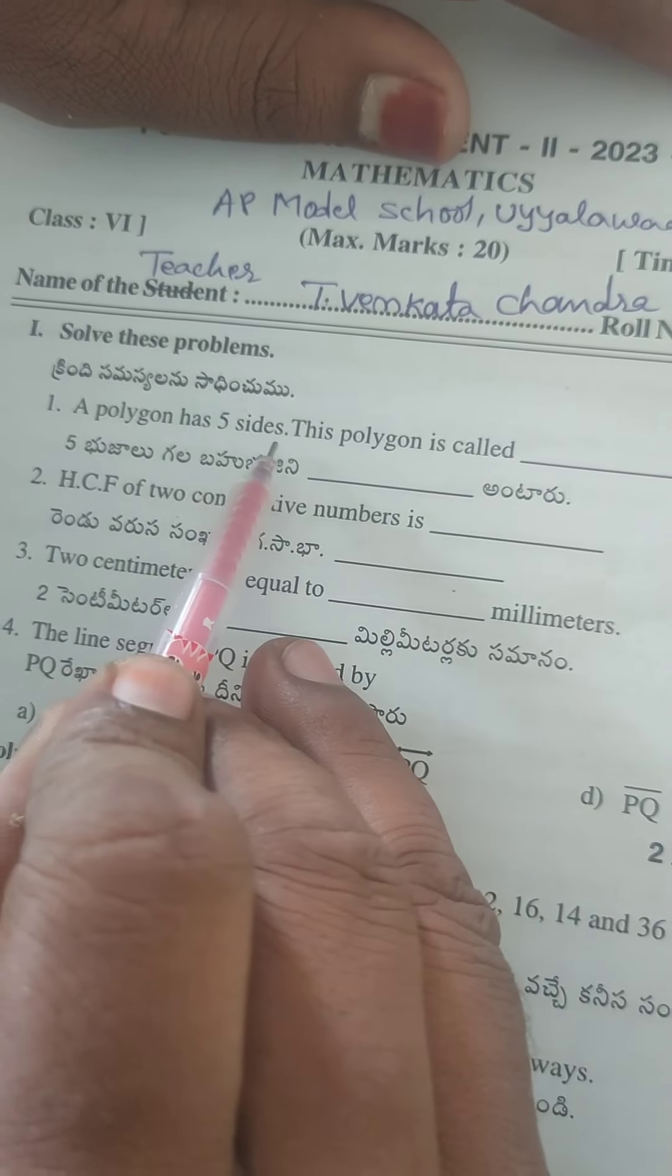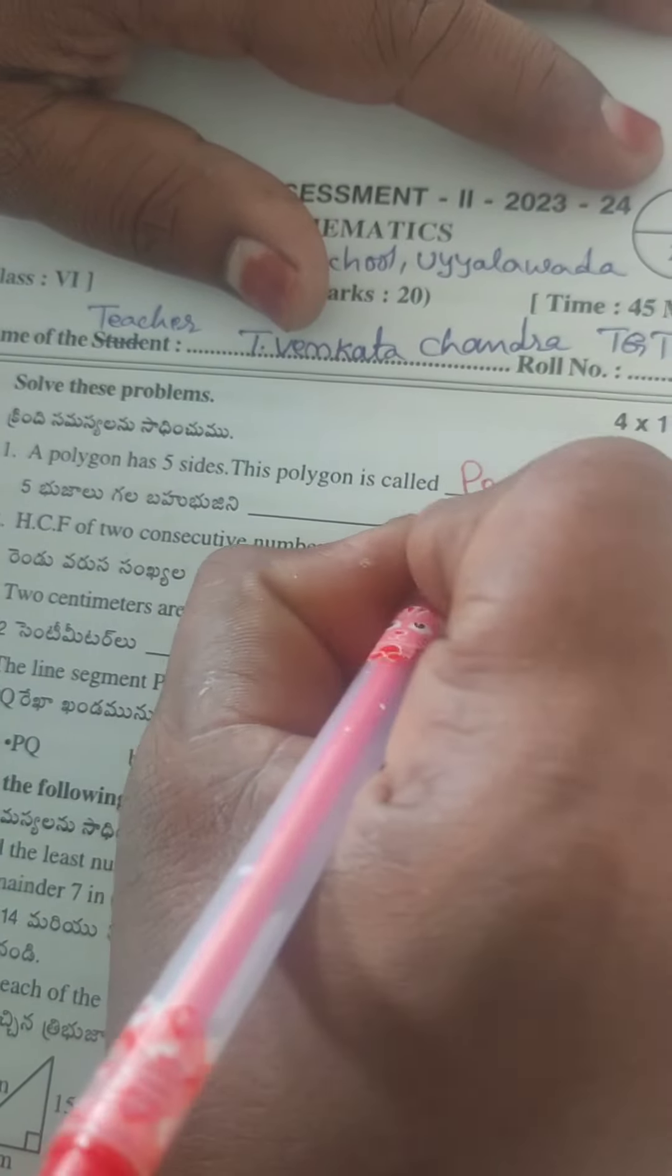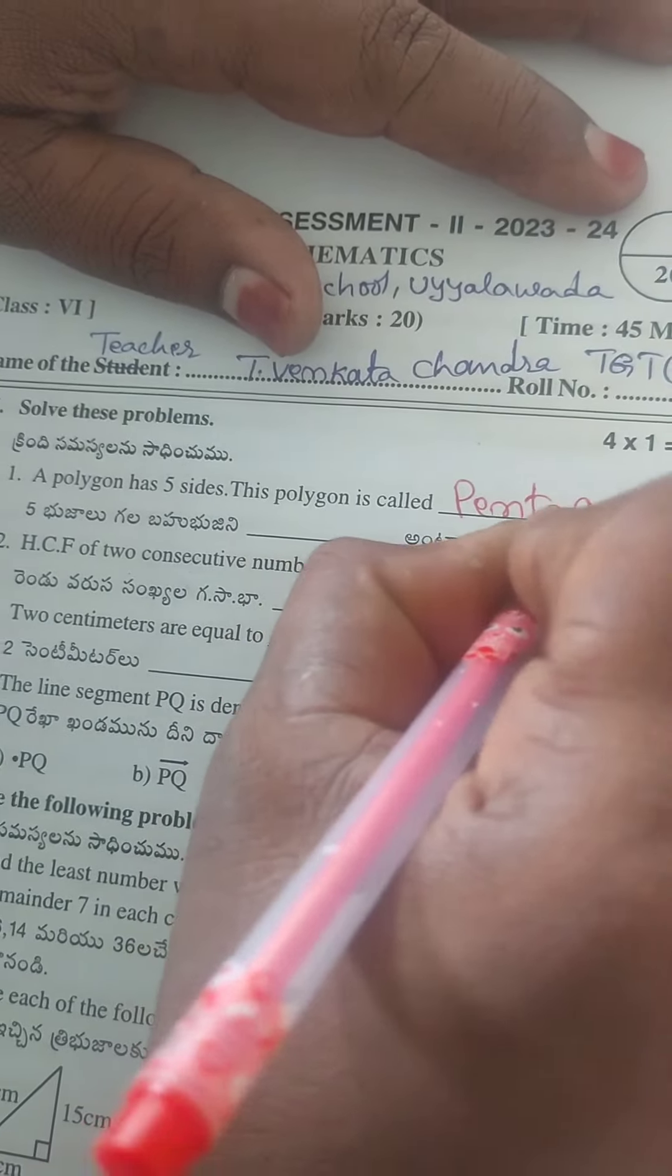A polygon has five sides. This polygon is called pentagon: P-E-N-T-A-G-O-N.